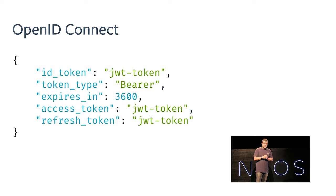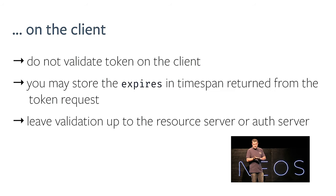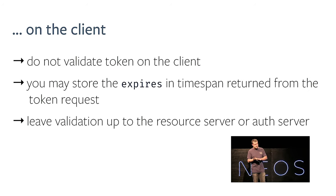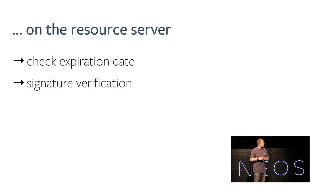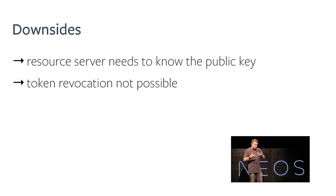Now we know everything about the user. We want to validate our tokens. The first thought is to do this on the client, but that's not a good idea because the client should only hold the token in the session and use it for API calls — not extract data from the token. You are allowed to use the 'expires' field from the token response to know roughly when the token will expire, but the rest should be left to the resource server or authorization server. On the resource server you can inspect the JWT, check the expiration date, and do signature verification — but signature verification has downsides. The resource server needs the public key from your cryptographic setup, and you have to distribute that public key across all your APIs, which is an additional maintenance burden.